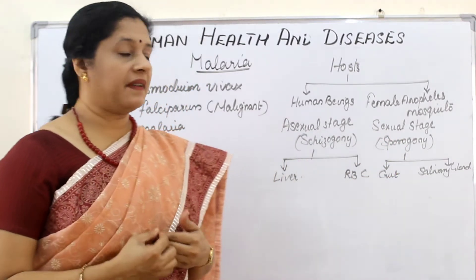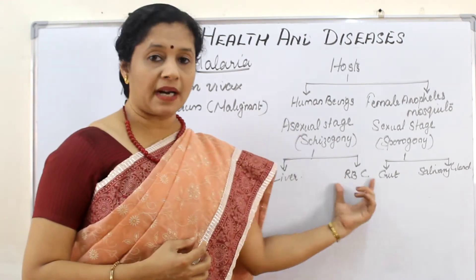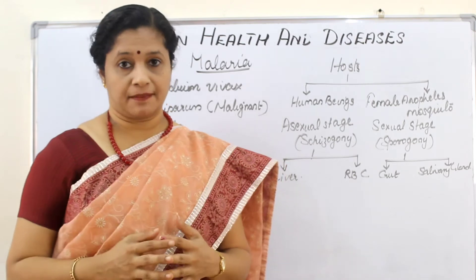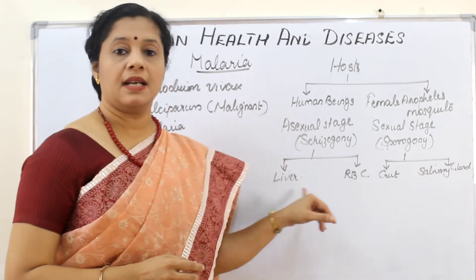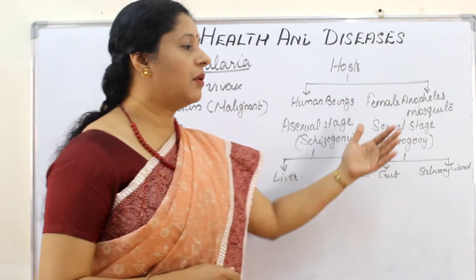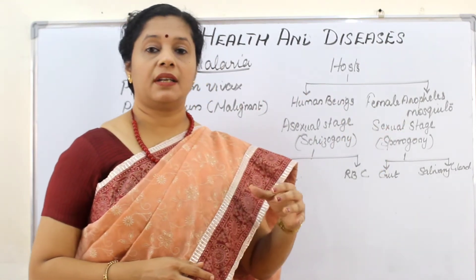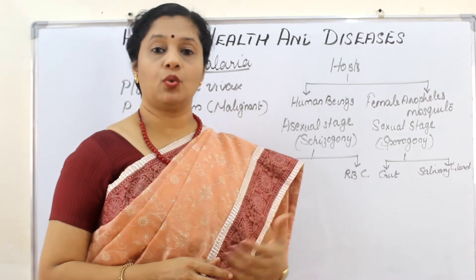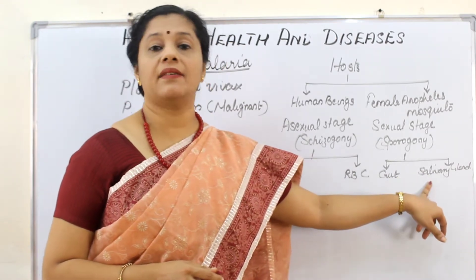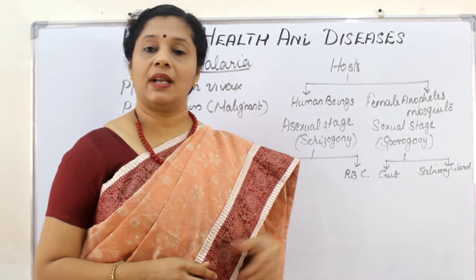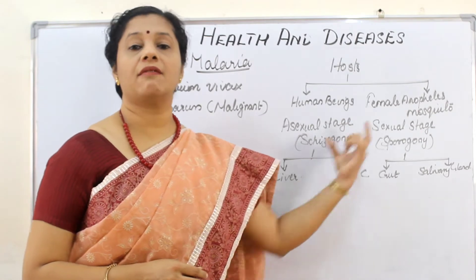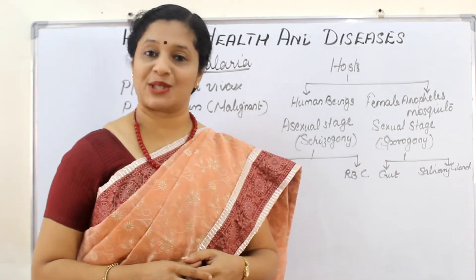Once Plasmodium infects a human being, two parts of the body are affected: the liver cells and the RBCs (red blood corpuscles). Similarly, within the body of the Anopheles mosquito, it multiplies or develops in two regions — one is the gut of the mosquito and the second is the salivary gland. Now let us see the asexual stage in human beings, followed by the sexual stage in the mosquito.